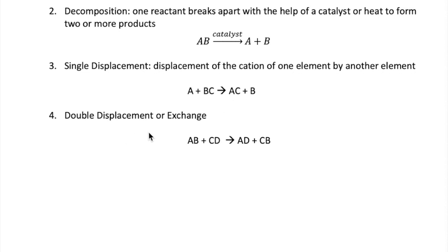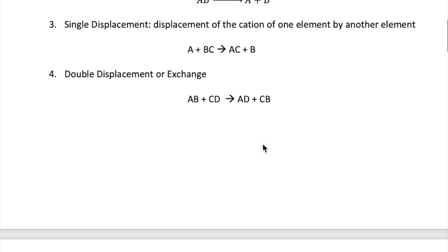Double displacement reactions, or exchange reactions, are ones with two ionic compounds as reactants, which then swap cations to produce new products. For a double displacement reaction to occur, one of these products must be a solid, liquid, or gas.